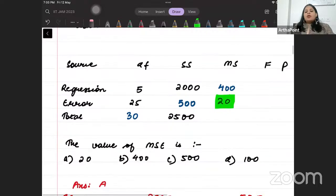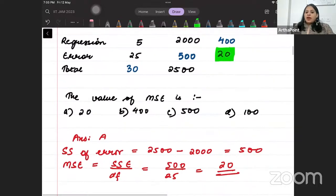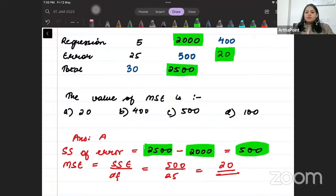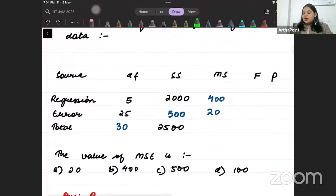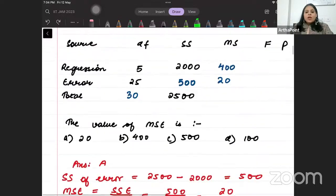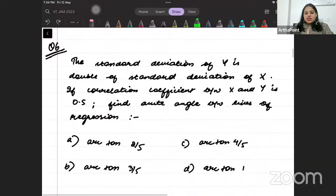Sum of squared of error upon the degrees of freedom. So beta, sum of squared of error is nothing but total, total minus regression, minus explained. That gives you 500. And MSE beta will be sum of squared of error divided by degrees of freedom. So 500 divided by 25 beta, that is 20. So the answer to this question is going to be 20. Is this clear? I hope this is making sense. Right? So this is your fifth question beta, which talks about finding MSE. Okay, so now beta we will go to the sixth question.